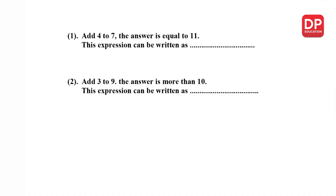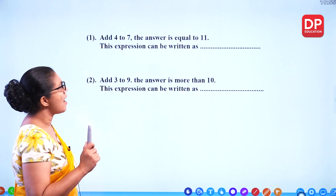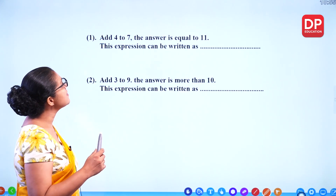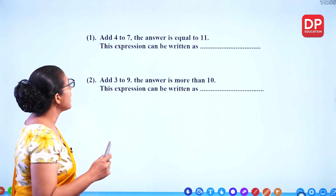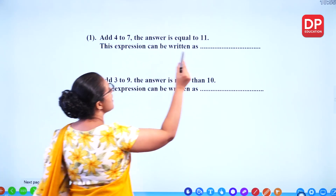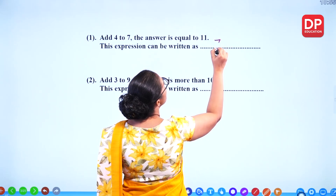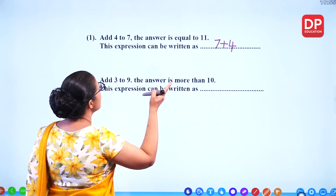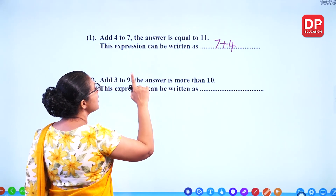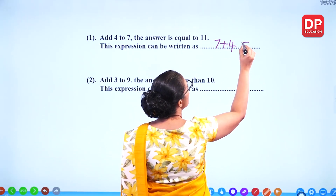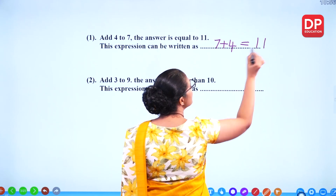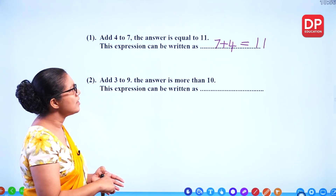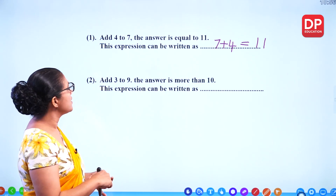Look at this one: add 4 to 7, the answer is equal to 11. How can we write this expression? Add 4 to 7 means 7 plus 4, or 4 plus 7 — order is not important. The answer is equal to 11. So these are expressions — you get digits, mathematical operations, and symbols.